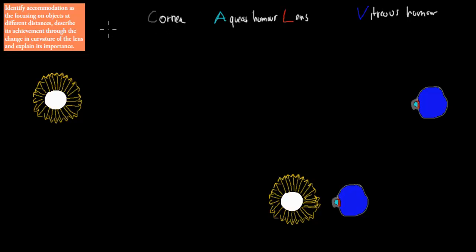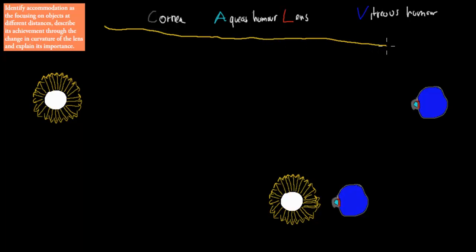So if light were to pass through, most of the bending would happen at the cornea, and some more bending will happen at the aqueous humor, a bit more at the lens. Then you're going to have the actual focal point — the point where it's meant to hit. Every single step along the way there would have been a bit of bending: cornea, then the aqueous humor, then the lens, then the vitreous humor. All of these four parts make sure that light is directed onto that one spot.